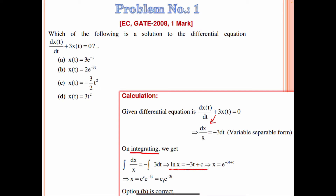This means x = e^(−3t + c), which can be written as e^c · e^(−3t). Since e^c is another constant, we write this as c₁ e^(−3t). So option B is correct.